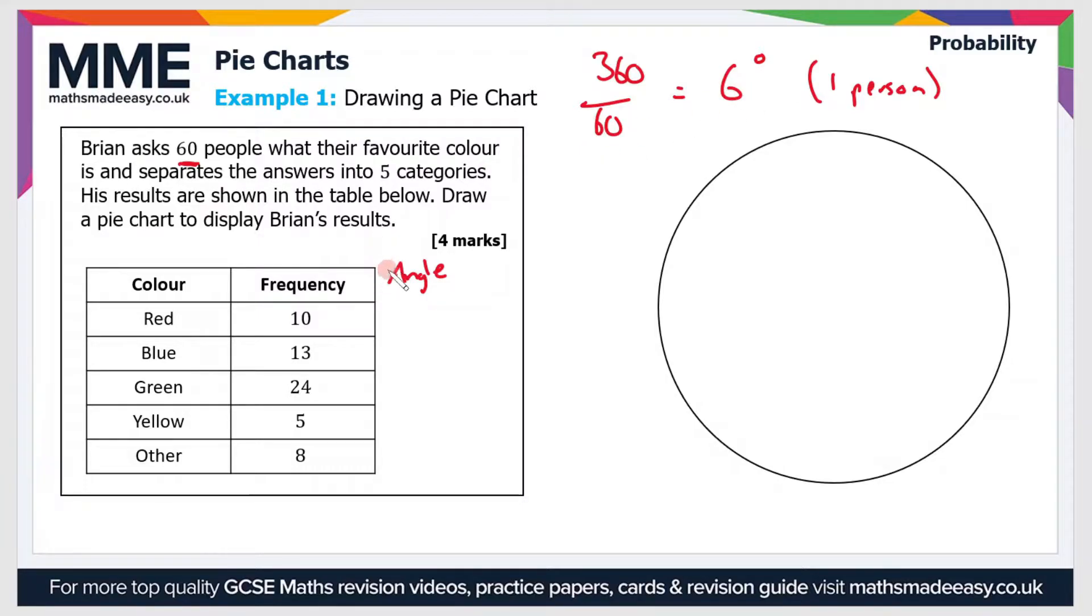So the first one, the color red will be 10 times 6, so that's 60 degrees. And then for blue it will be 13 times 6 which is 78 degrees.